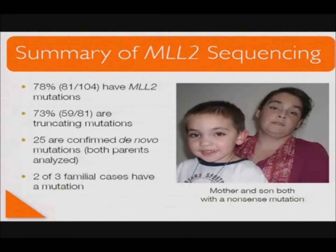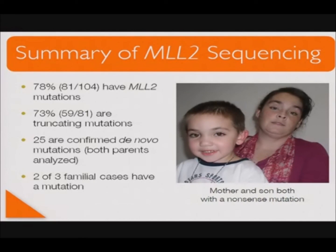To summarize our sequencing results: 78% have an MLL2 mutation. Within all mutations, 73% are truncating mutations. We have 25 mutations confirmed as de novo — not present in either parent. Two of the three familial cases have an MLL2 mutation, including the pair shown in the photo on the right with a nonsense mutation.